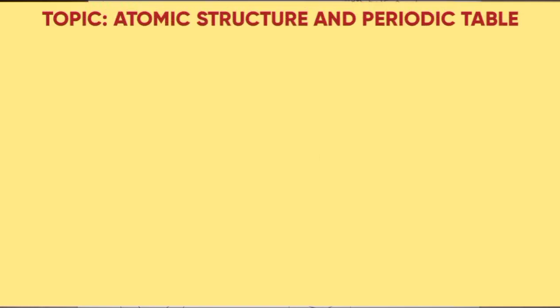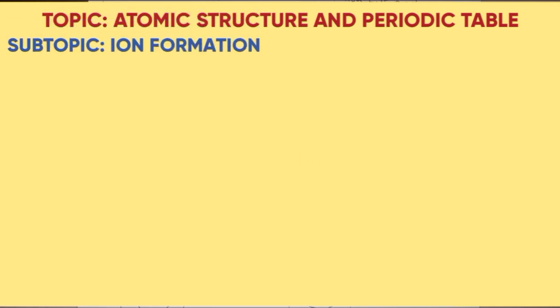Welcome to the Formula 1 to 4 Simplified channel. In today's lesson, we look at the topic of atomic structure and periodic table. The subtopic is ion formation. We start by looking at what is an ion. An ion is a charged particle.